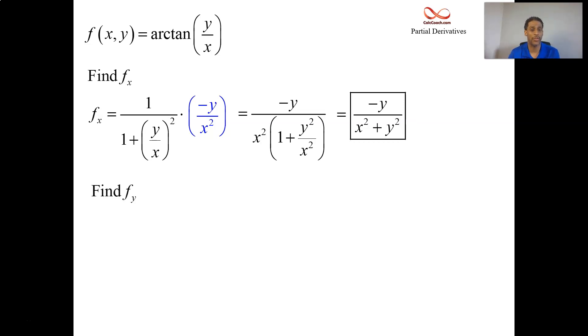Now let's take the y partial. It starts off the same way. It's an arctan, so it's 1 over 1 plus that guy squared. When it's time for the chain rule though, taking the derivative of the inside function, now it's going to be treated as a derivative with respect to y.